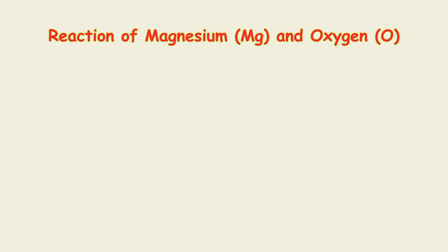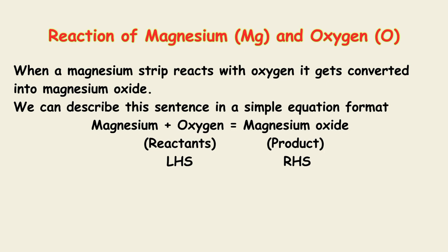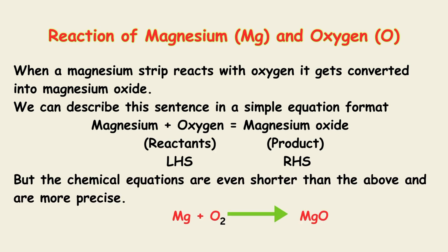Now let us describe this with the example of the reaction of magnesium and oxygen. When magnesium strip reacts with oxygen, it gets converted into magnesium oxide. We can describe this in a simple equation format: magnesium plus oxygen equals magnesium oxide. The magnesium and oxygen on the left-hand side are known as the reactants, and the magnesium oxide on the right-hand side is known as the product.